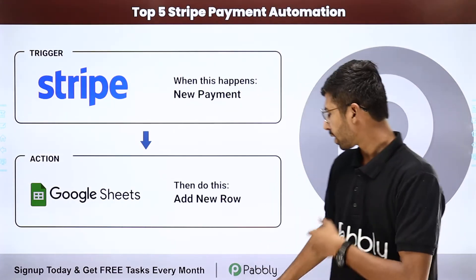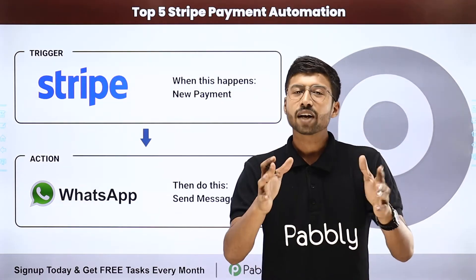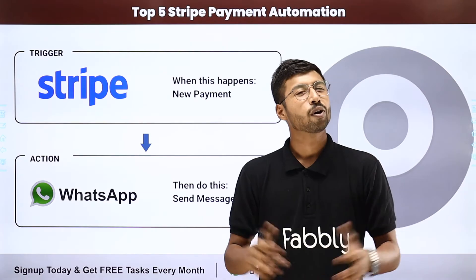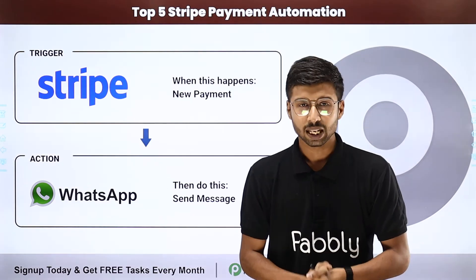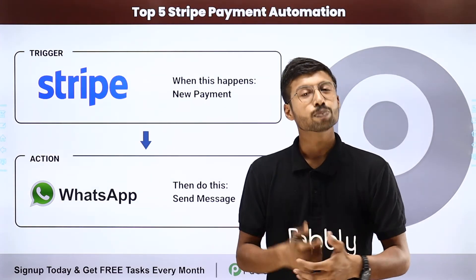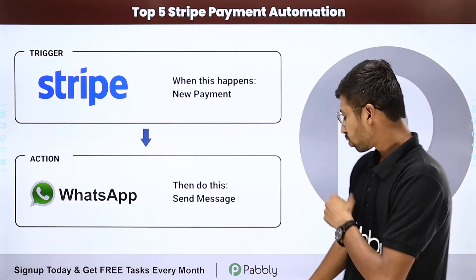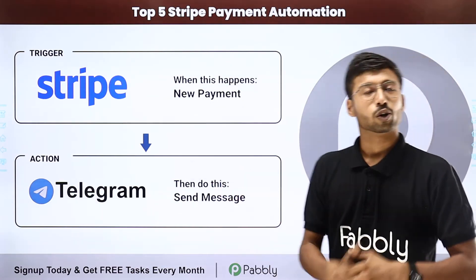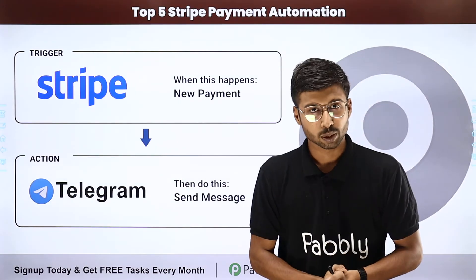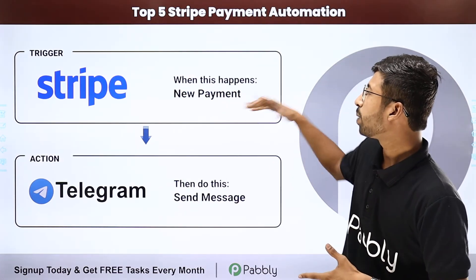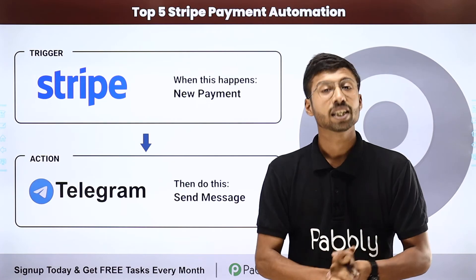Moving ahead to our next automation, Stripe to WhatsApp — this is my personal favorite. Whenever I receive a payment on my Stripe account, automatically a confirmation message on WhatsApp is sent to the customer who made the payment. It definitely increases the personal touch I have with my customers, and my customers are also assured about their payments. Our last automation idea is Stripe to Telegram. Whenever a new payment is received on Stripe, automatically a message is shared to my Telegram group or Telegram channel with my team members.